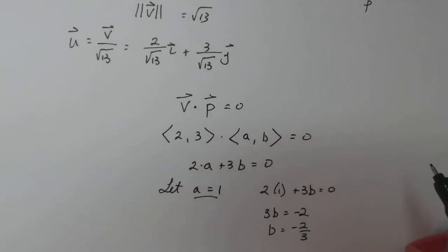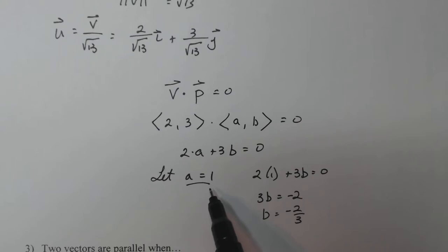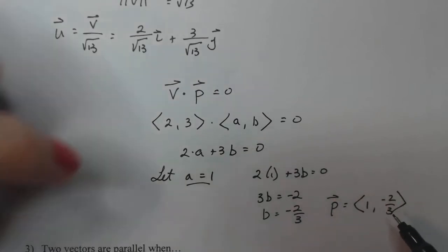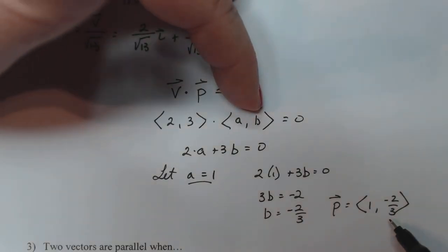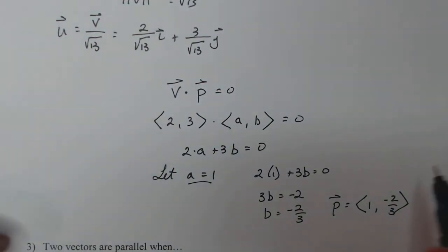So I just let A equal 1, I calculated, if A is 1, what does B have to be? And then those two things together should give me the vector P that I want. So P will be 1 comma negative 2/3. And if you want to see if it works, just do the dot product. You can do that yourself. So do 2 comma 3 dot 1 comma negative 2/3 and see if it actually turns out to be zero. You should check yourself. Check now. I guarantee you it will work.